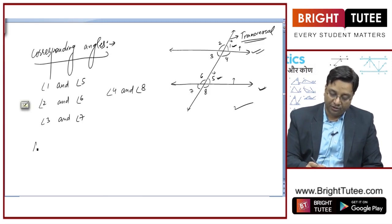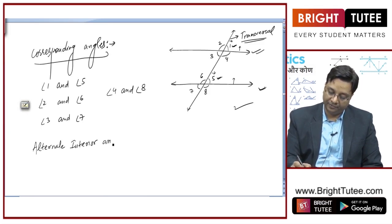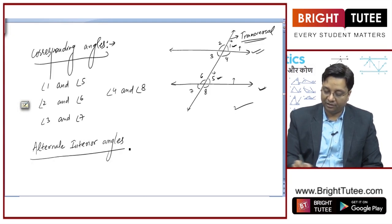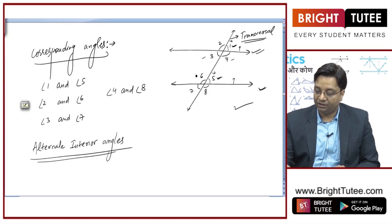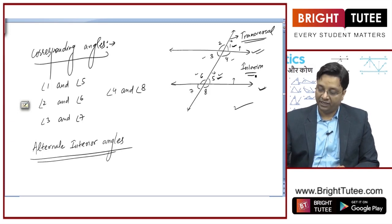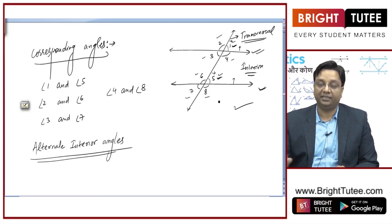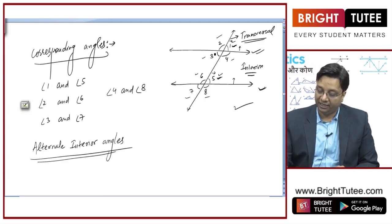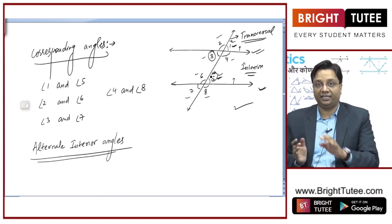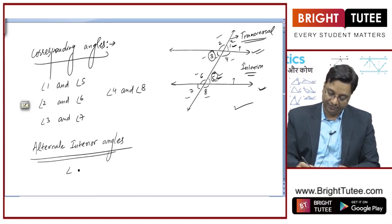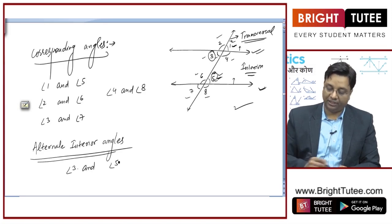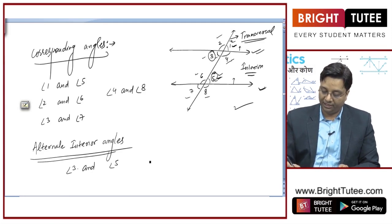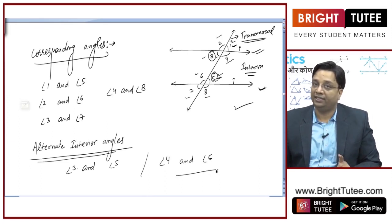Let us study about alternate interior angles. Which angles are alternate interior angles? Basically, angles 3, 4, 5, and 6 are interior angles, and 1, 2, 7, and 8 are exterior angles. So, out of these interior angles, angle 3 and angle 5 are alternate interior angles. Similarly, angle 4 and angle 6 are also alternate interior angles.